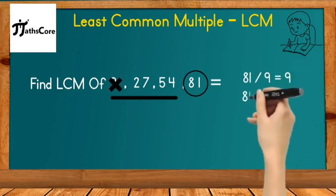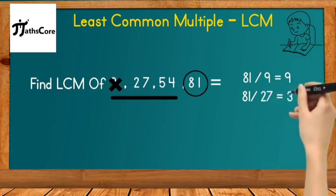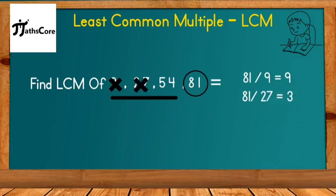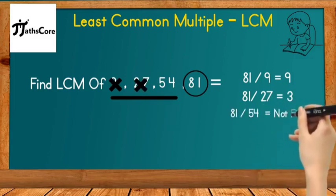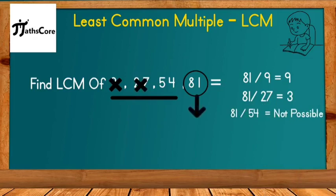Next number is 27. If we divide 81 by 27, we get 3, so 81 is a multiple of 27 also. Next number is 54. If we divide 81 by 54, complete division is not possible, so 81 is not a multiple of 54.